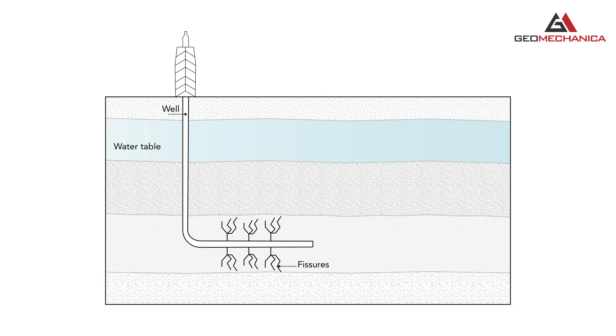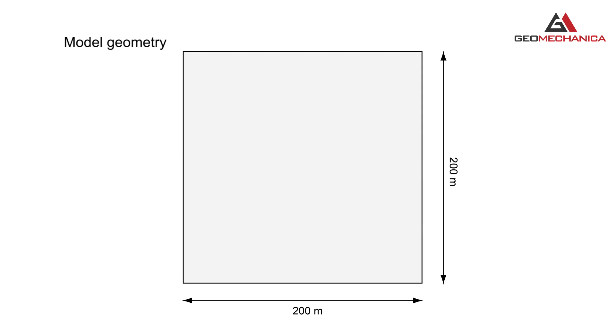Let's consider an example of fluid injection into a permeable rock mass at depth. Here we define a 200 meter by 200 meter modeling domain with a central injection well.